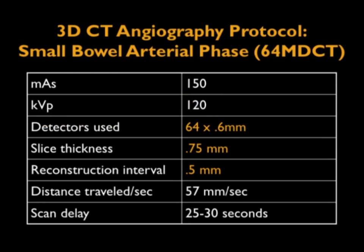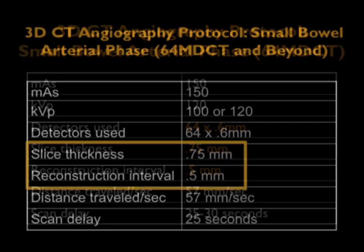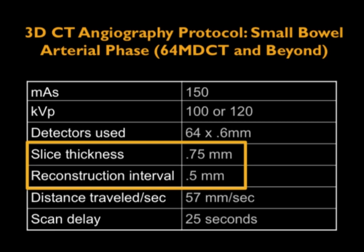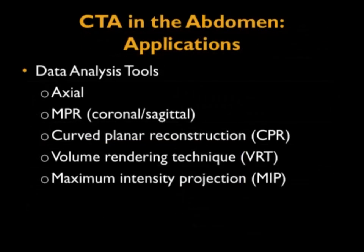Regarding scan parameters, since we're going to do reconstructions, we like thin sections — 0.75 millimeter thick sections, every 0.5 millimeters — on a 64-slice scanner or anything beyond. Those parameters work very well. When looking at areas like the bowel, it's not just axial imaging; you need the full armamentarium from multi-planar to 3D imaging to really do a great job.